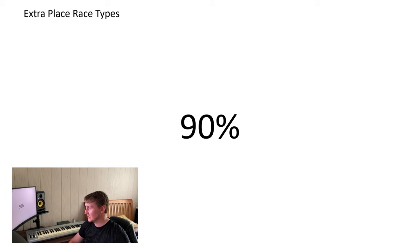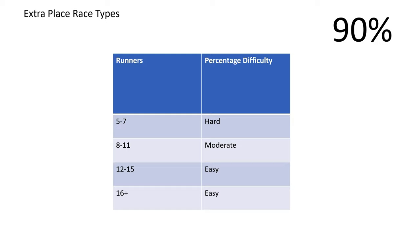To achieve a 90% match, race size matters. A 5–7 runner race can be challenging to get a 90% match on due to fewer runners and how bookmakers price the market. An 8–11 runner race is moderate — mostly straightforward but occasionally tricky. A 12–15 runner race is generally pretty easy to find a runner at 90% or higher. A 16+ runner race is very easy to get 90%+ matches, because there are so many runners available.